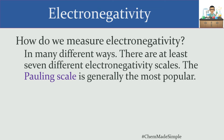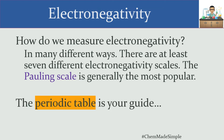The Pauling scale is generally the most popular scale. Chances are, if you look up electronegativity values, those values will be based on the Pauling scale. As for why it's more popular than the six or so other scales — well, when you win two Nobel Prizes and everyone else has only one, you tend to be a little bit more popular.